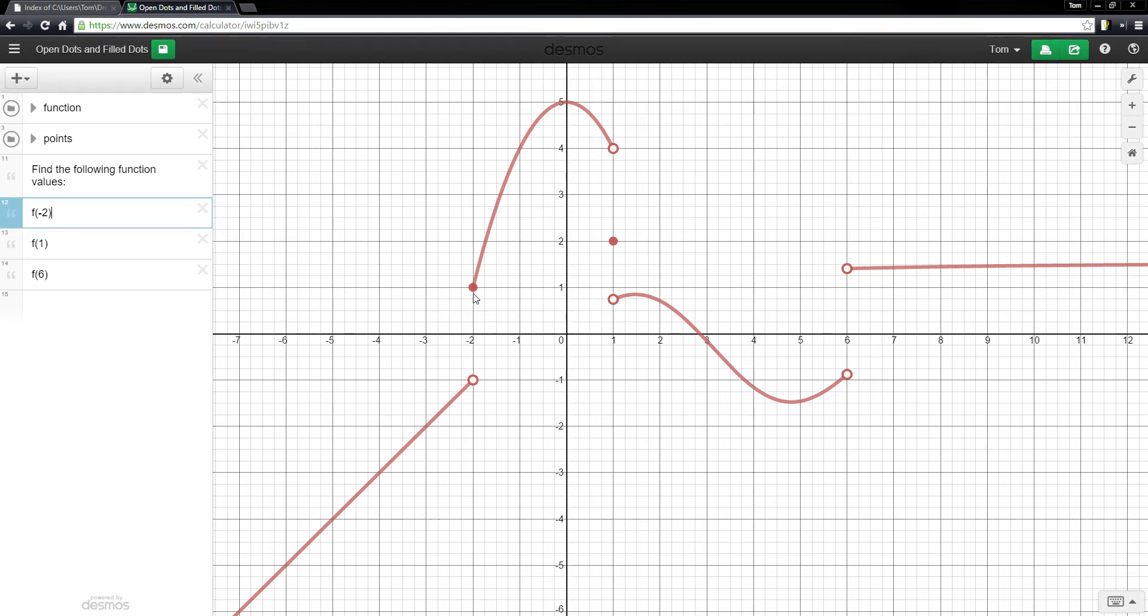And the filled dot means that there is a point on the graph there. So, for instance, here, now I can tell if I had the formula for this and I wanted to plug in negative 2, I would find where that point is, the filled dot. And the filled dot has a y value of positive 1. So, f of minus 2, in this case, is going to be a positive 1.